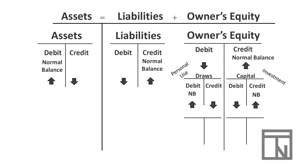The next category in owner's equity is revenue. Revenue is whenever the business makes a sale or earns money. Any money that the business earns belongs to the owners and increases their financial right, which is why it's on the right-hand or increasing side of owner's equity. Just like capital, revenue has a credit increasing side and a debit decreasing side — in other words, it has a credit normal balance.